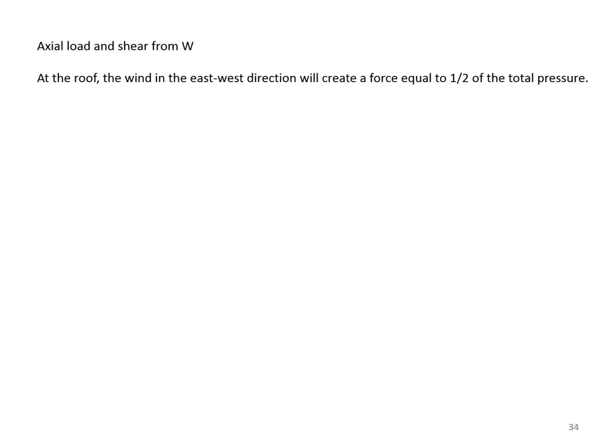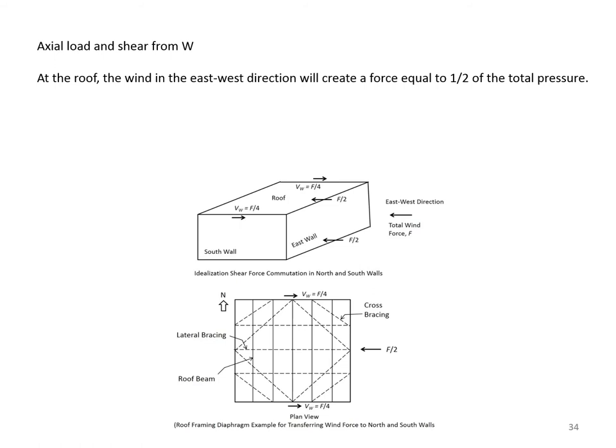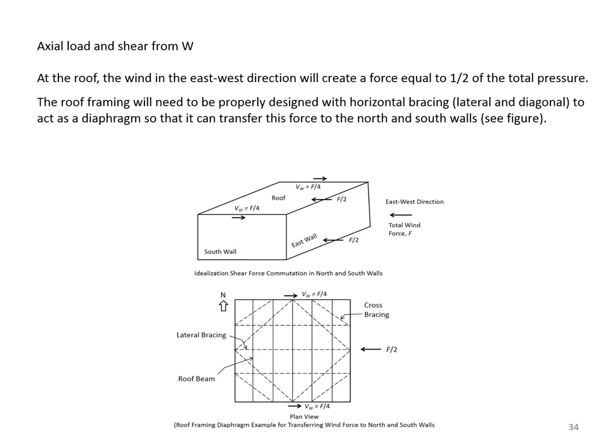For wind load, at the roof, the wind in the east-west direction creates a force with F/2 going to the roof and F/2 going to the ground. The roof framing is assumed to act as a diaphragm with horizontal and diagonal bracing to transfer F/2 to the north and south walls, giving each wall an in-plane shear of F/4.